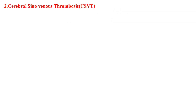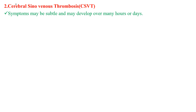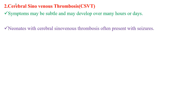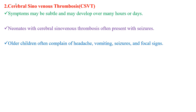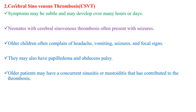The second is cerebral sinovenous thrombosis. Symptoms may be subtle and develop over many hours or days. Neonates with cerebral sinovenous thrombosis often present with seizures, whereas older children often complain of headache, vomiting, seizures, and focal signs. They may also have papilledema and abducens palsy. Older patients may have concurrent sinusitis or mastoiditis that contributed to the thrombosis.